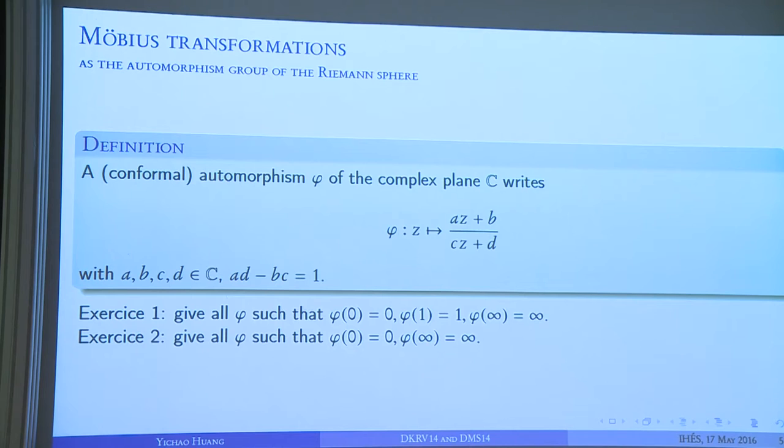The first exercise is to find all transformations that fix three points on the sphere. There are three degrees of liberty, you must fix three points. There is only one transformation: it's the identity.